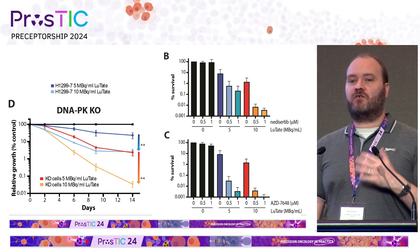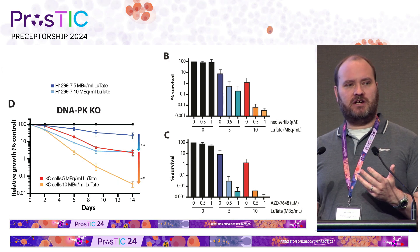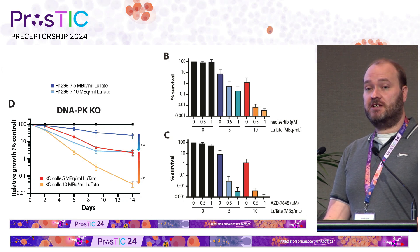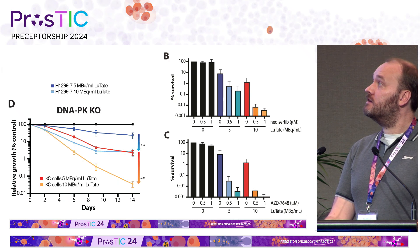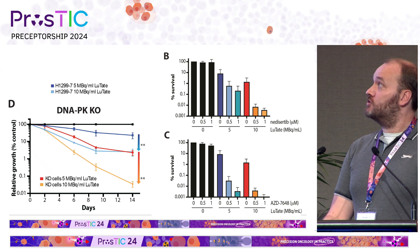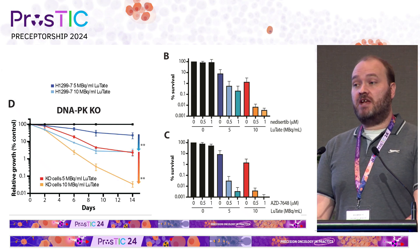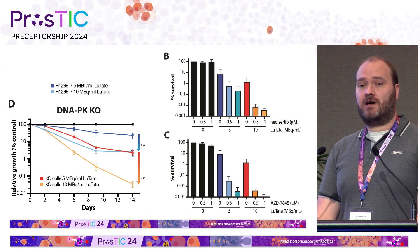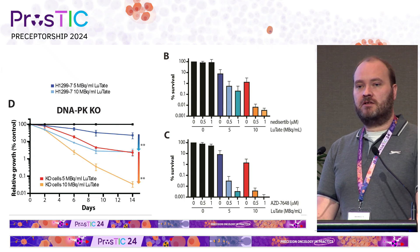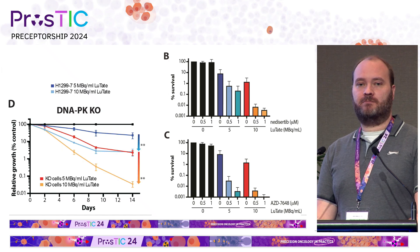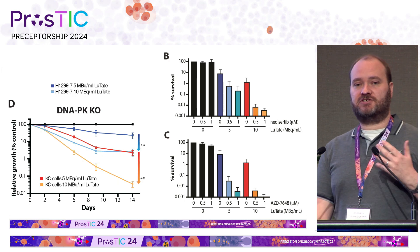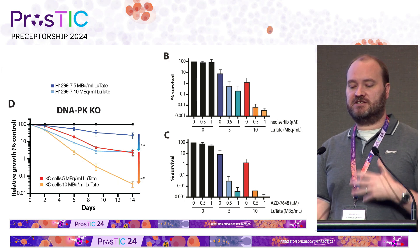Next we wanted to validate: did this just come up in the screen, or is this a real finding? If we take a cell line and do a single knockout of the DNA-PK gene, we can see that we can sensitize the cells specifically to two different doses of lutetate. And importantly, not just with a genetic knockout — we also used two different pharmacological inhibitors of DNA-PK, which both elicit the same response. We can use a drug that inhibits DNA-PK and see the same sensitization of cells to the lutetate therapy in culture.